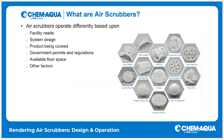They all operate differently based on the needs of the facility, how the system was designed, and the products being cooked. Red meat rendering versus poultry rendering may have different styles and designs. A lot of it is also based on government permits and regulations for your area and your state. Available floor space plays a big factor in how air scrubbers are used. It's important to understand your system design and how it's set up and why.